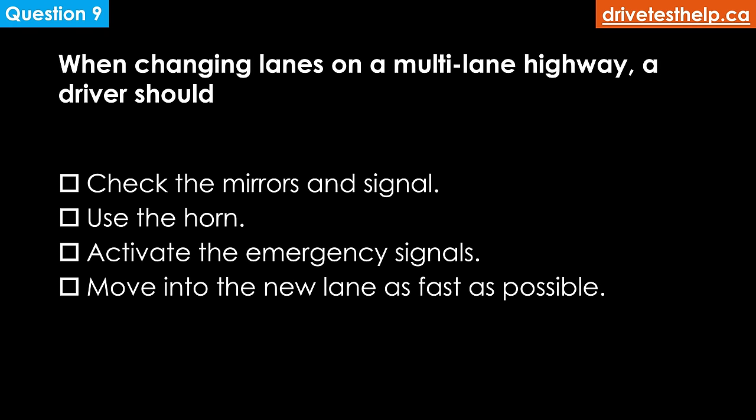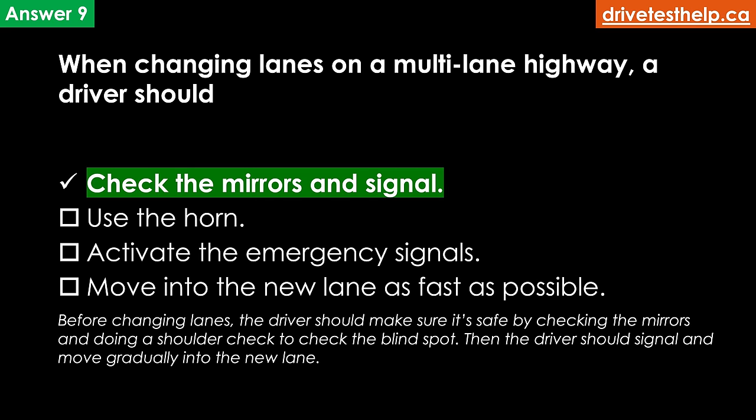When changing lanes on a multi-lane highway, a driver should: check the mirrors and signal; use the horn; activate the emergency signals; or move into the new lane as fast as possible. The correct answer is check the mirrors and signal. Before changing lanes, the driver should make sure it's safe by checking the mirrors and doing a shoulder check to check the blind spot, then signal and move gradually into the new lane.